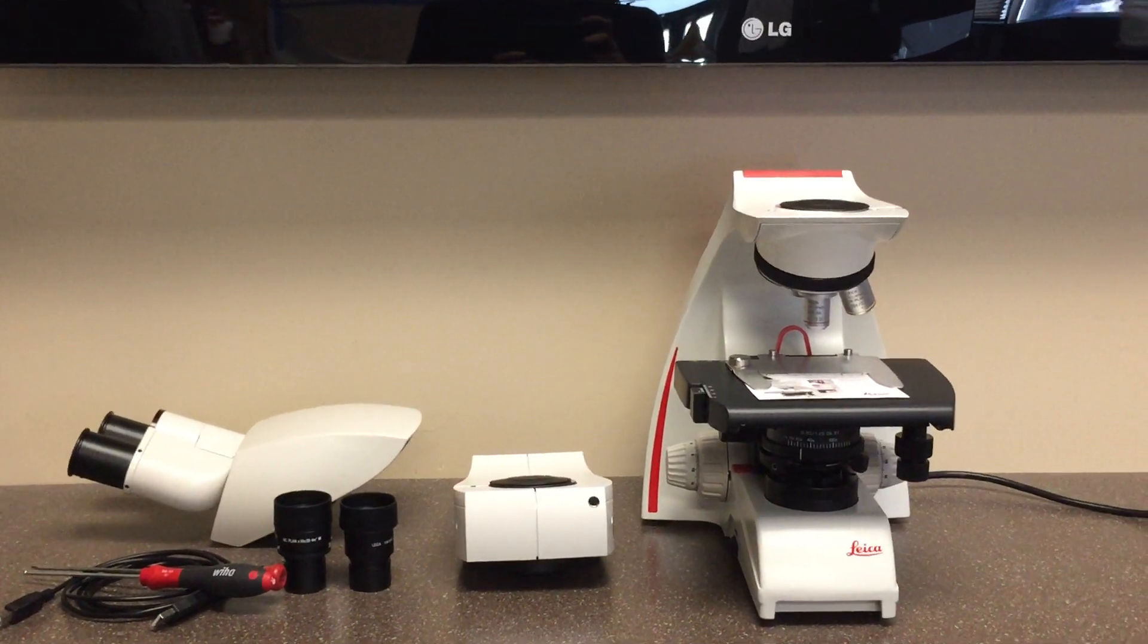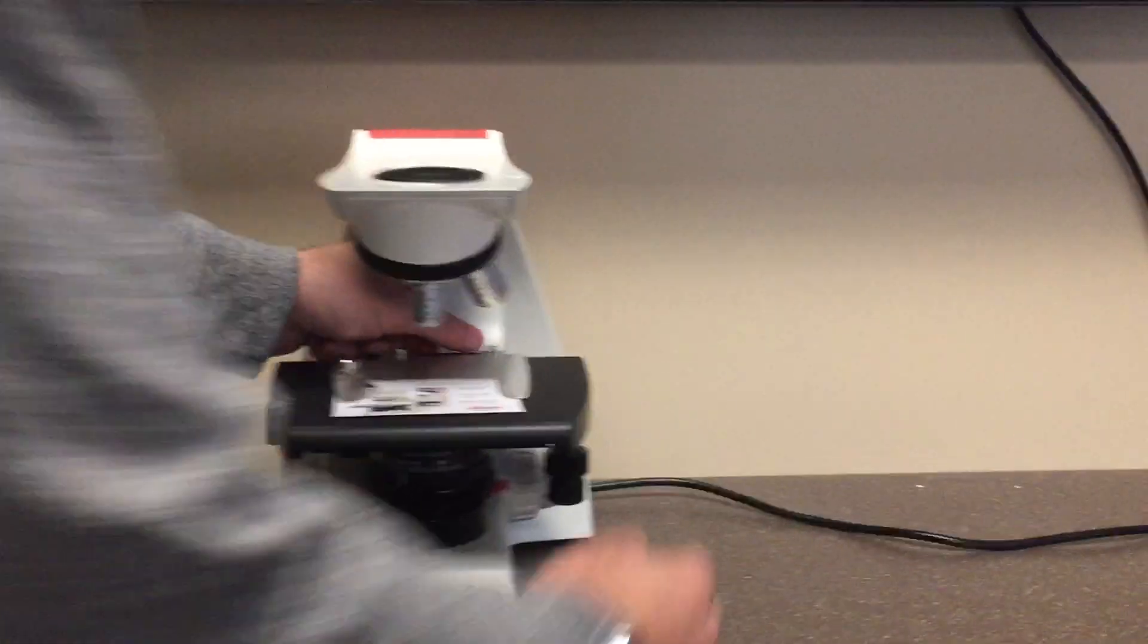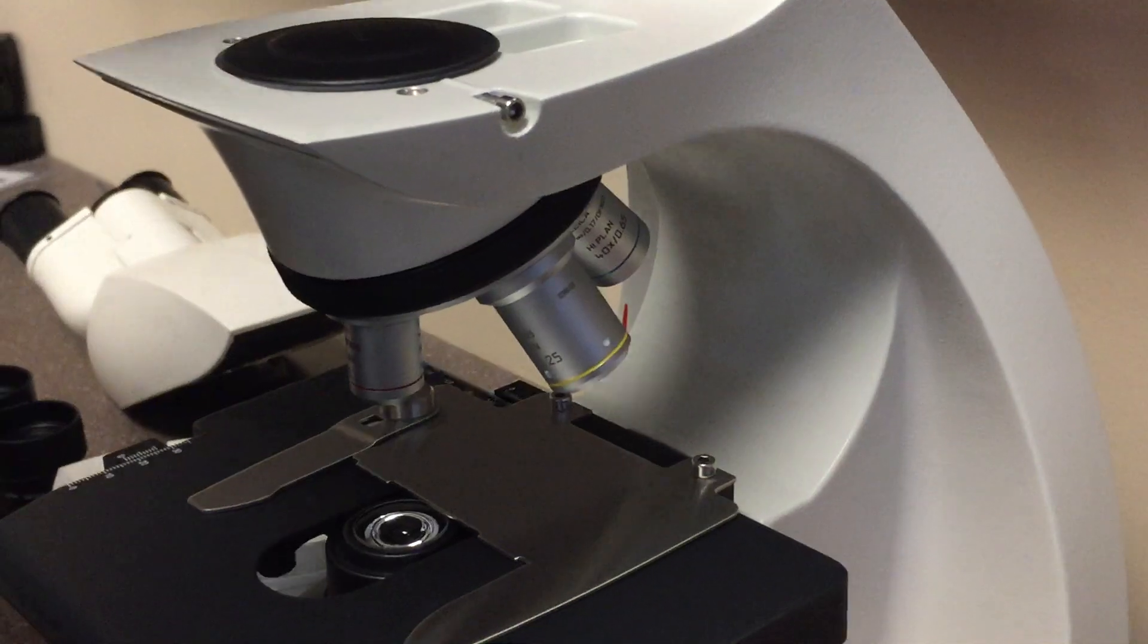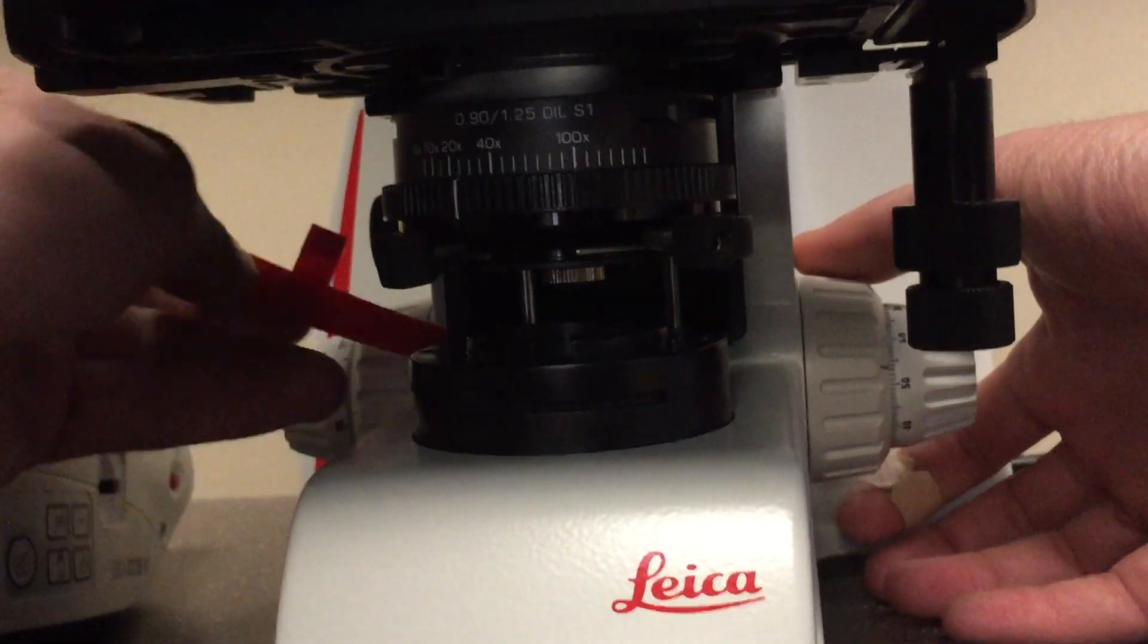First step is removing the shipping lock mechanisms from the microscope. You'll remove the top bar, remove the instruction sheet, focus up the microscope, then remove the bottom support.